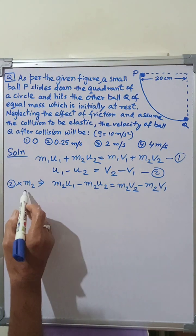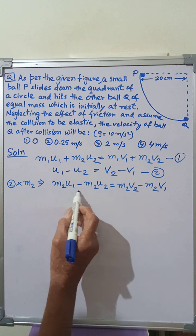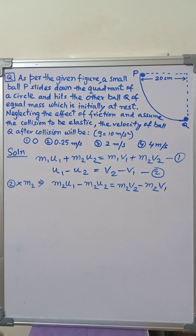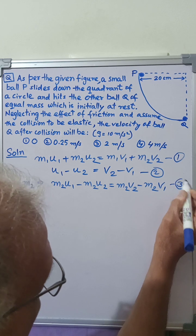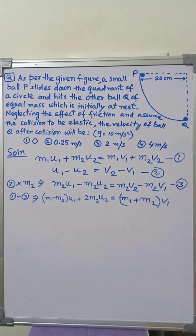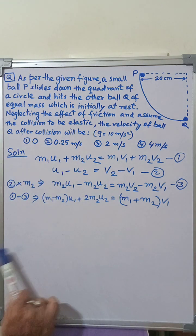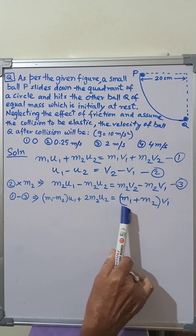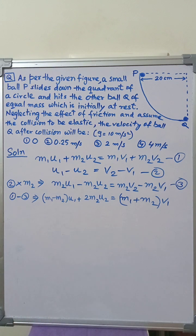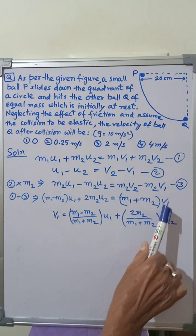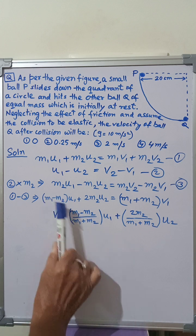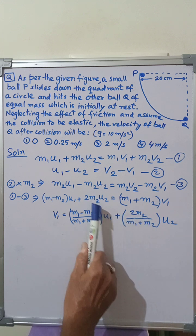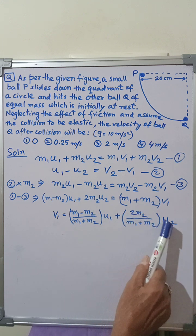Multiplying equation 2 by M2, we get M2·U1 − M2·U2 = M2·V2 − M2·V1. We mark this as equation 3. Subtracting equation 3 from equation 1, we get (M1 − M2)·U1 + 2M2·U2 = (M1 + M2)·V1. On simplification, V1 = [(M1 − M2)/(M1 + M2)]·U1 + [2M2/(M1 + M2)]·U2.